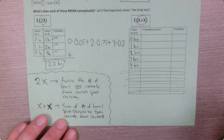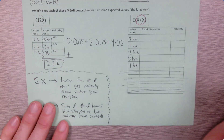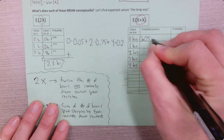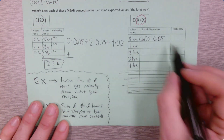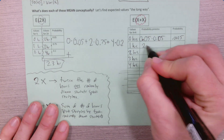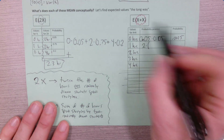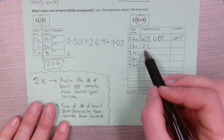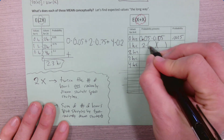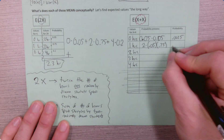Now we need the probability of each outcome — this is the long way. For x plus x to be 0 hours, both students must take 0 hours: there's a 5% chance of that happening, so 0.05 times 0.05 = 0.0025. For 1 hour total, there are two ways: the first student has 0 hours and the second has 1 hour, or vice versa. So we multiply by 2 because there are two different orderings, giving 2 × (0.05 × 0.75) = 0.075.